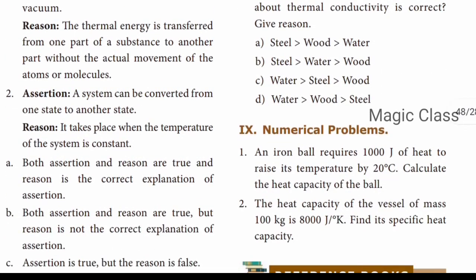Question number two: Assertion: A system can be converted from one state to another state. Reason: It takes place when the temperature of the system is constant. The answer is option A - both assertion and reason are true, and reason is the correct explanation of the assertion.